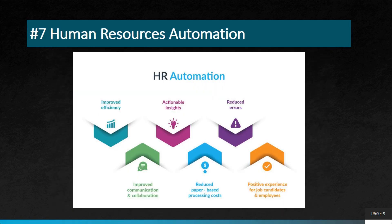Then we have human resources automation. HR is a big area in any company — whether hiring or offboarding employees, there are many steps and potential loopholes that can be automated. With automation, businesses can automatically process employee onboarding and offboarding requests, manage employee records, and generate reports. This can help improve HR process efficiency and reduce errors.